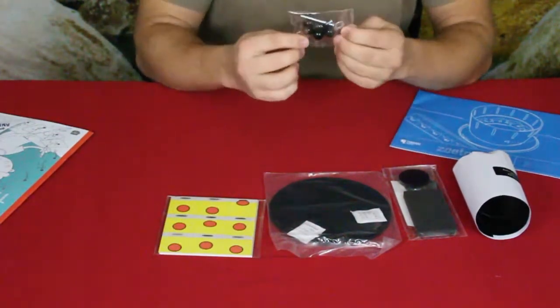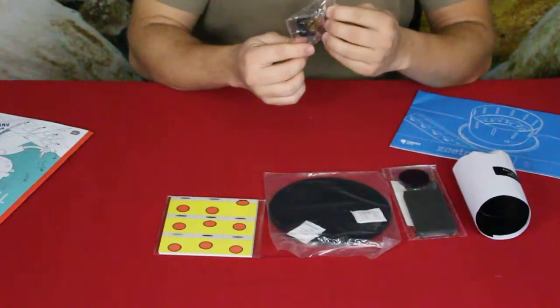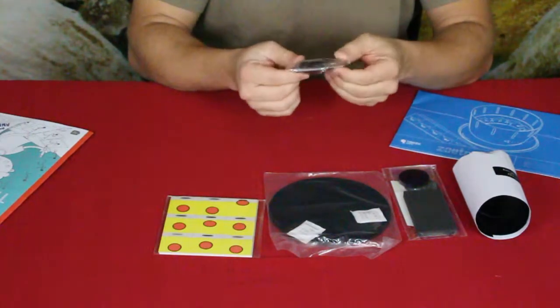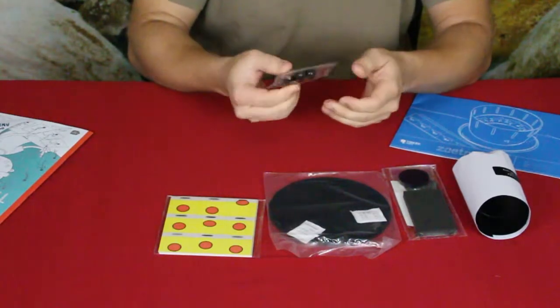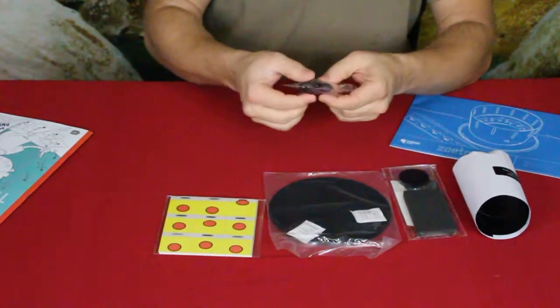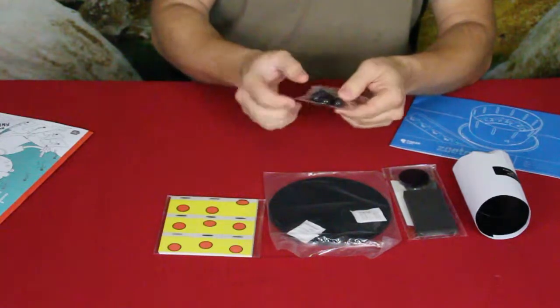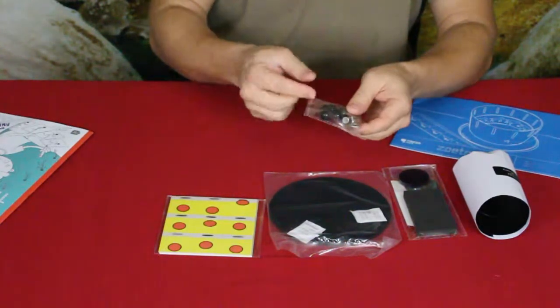Right here we've got what looks like some kind of a bolt and a screw and washer, as well as some round balls. Feels kind of heavy. I don't know if those are... I think those might be plastic. So little plastic spheres.